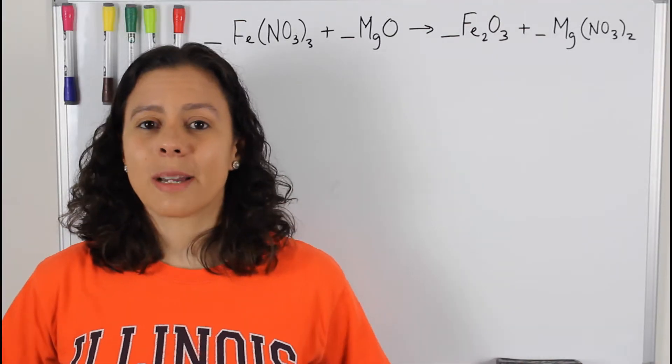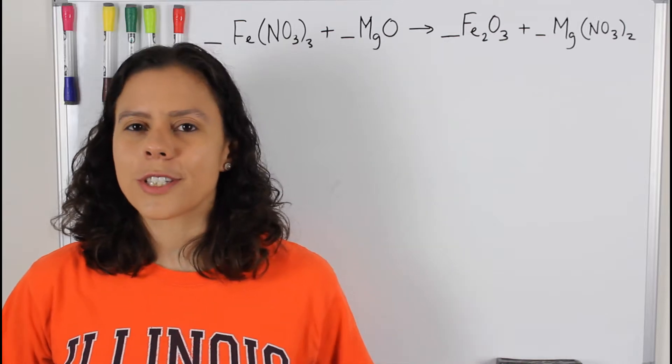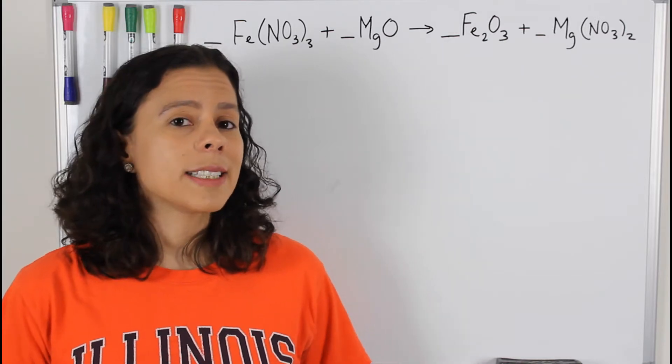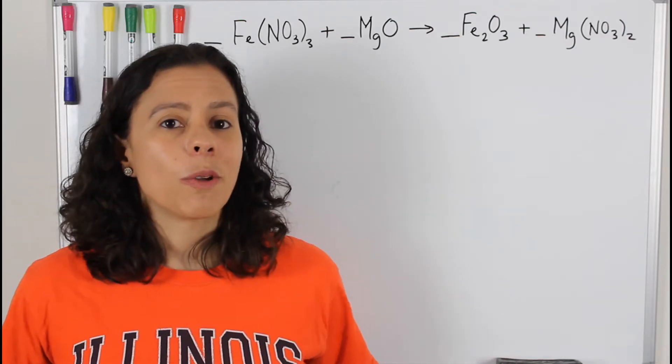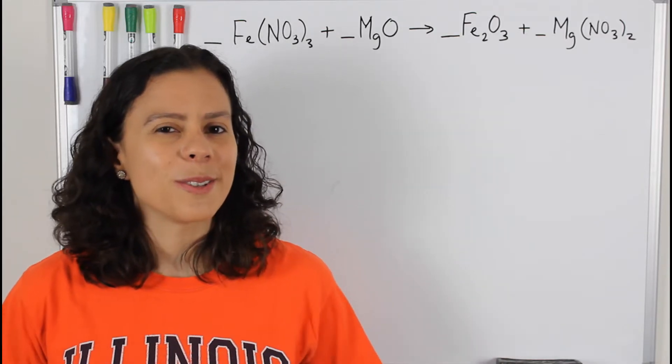If you saw my other video on balancing chemical equations, you know that the very first thing we have to do is write down all of the elements that we have on the reactant side. However, when we have polyatomic ions, we can use a shortcut,